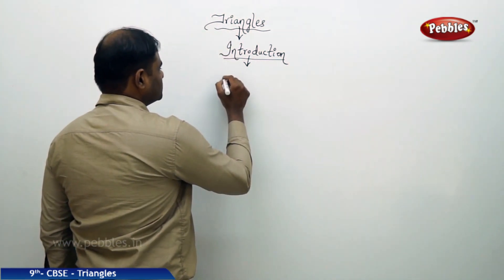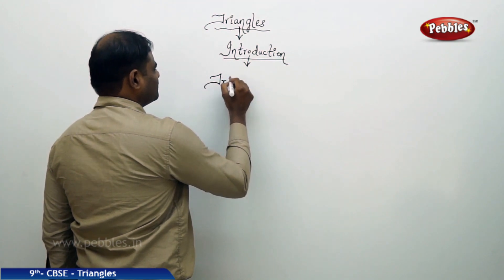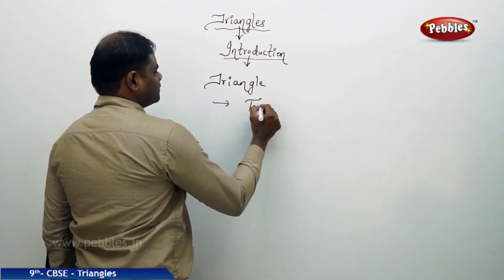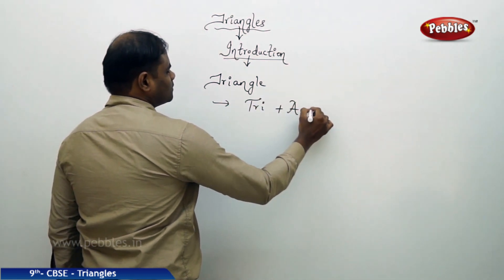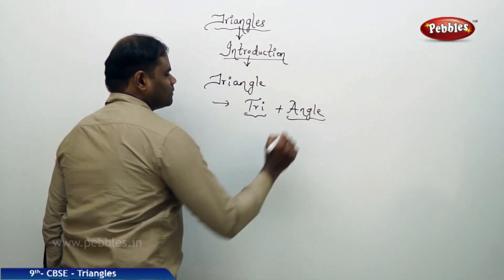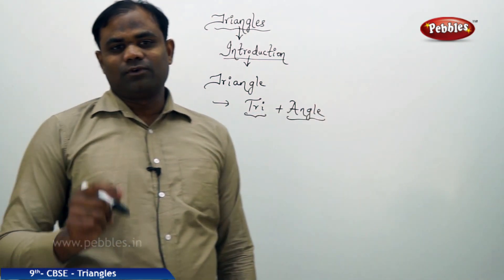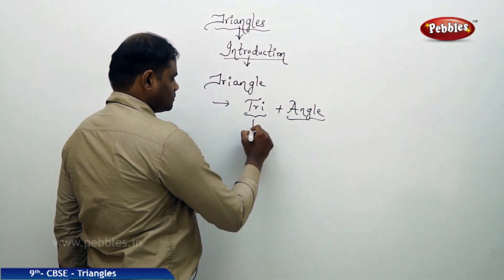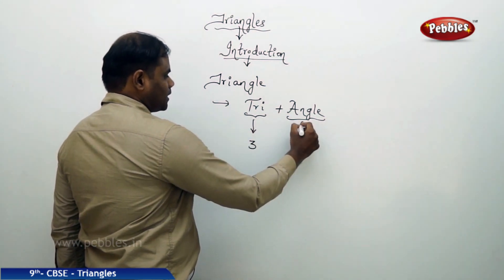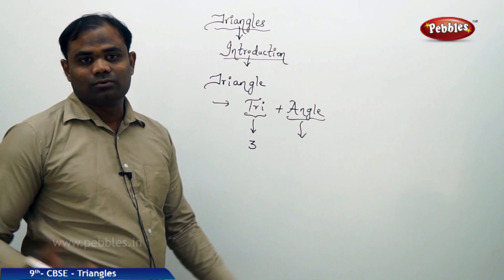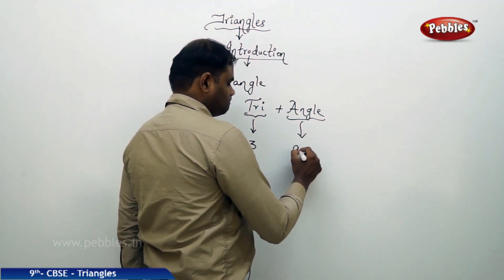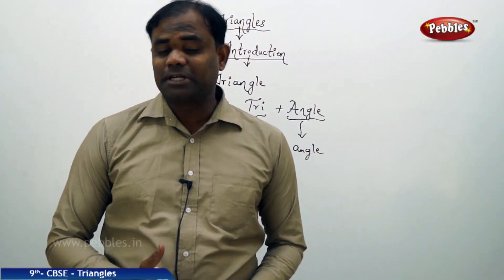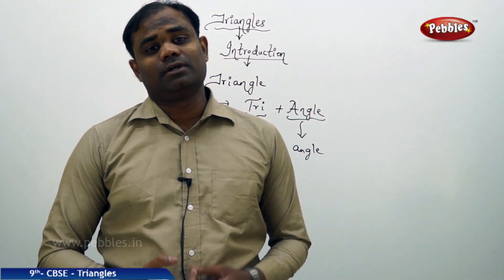As the word triangle refers, a triangle is clearly separated into 'tri' plus 'angle'. So a triangle is formed by tri and angle. Tri refers to three, and angle refers to the angle. So any figure which has three angles involved is called a triangle.